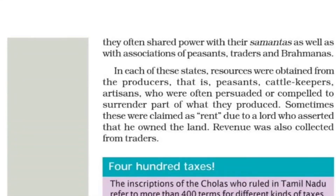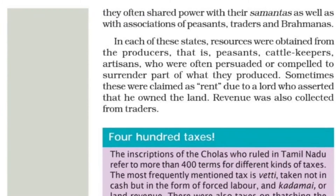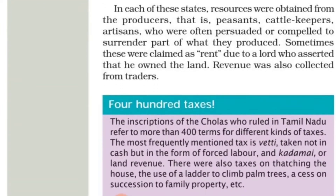In each of these states, resources were obtained from the producers — that is, peasants, cattle keepers, and artisans — who were often persuaded or compelled to surrender part of what they produced. Sometimes these were claimed as rent due to the lord who asserted that he owned the land. Revenue was also collected from traders.